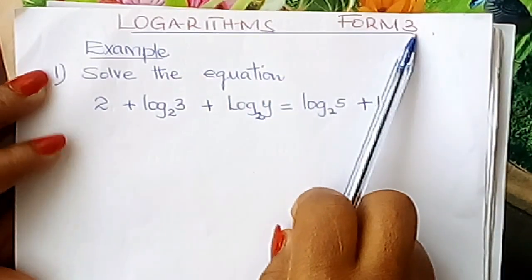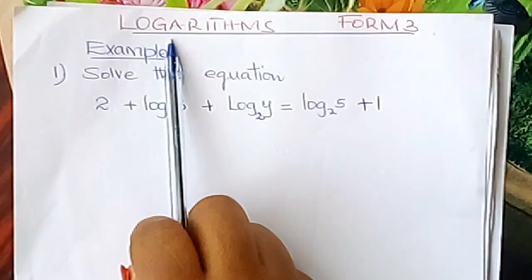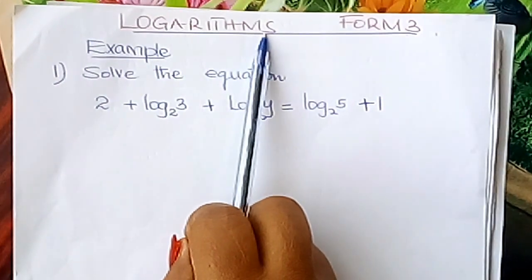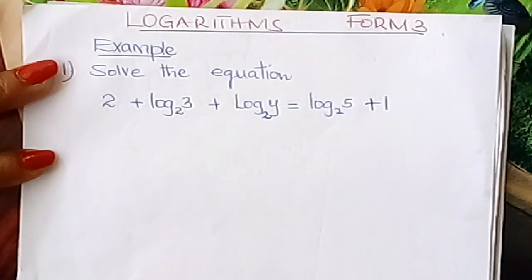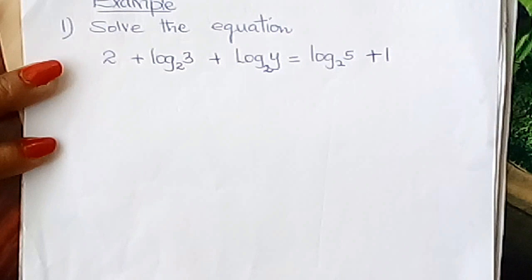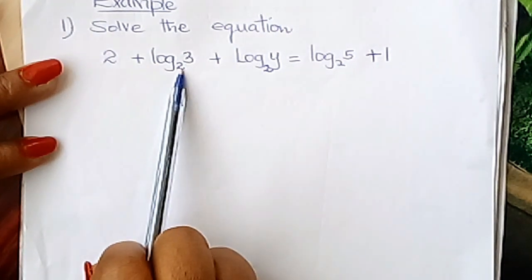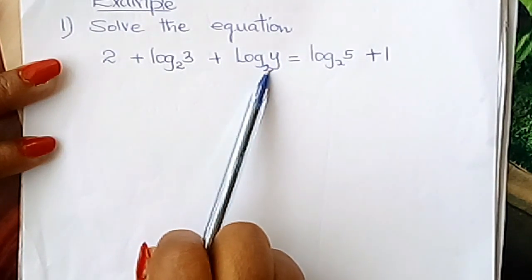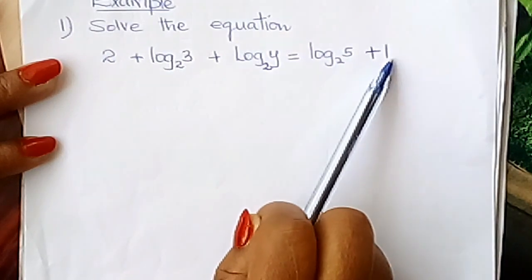Welcome learners to Form 3 mathematics. Today I'd like to revise with you about logarithms, Form 3 work. So let us look at this example. You are told to solve the equation: 2 + log₂3 + log₂y = log₂5 + 1.